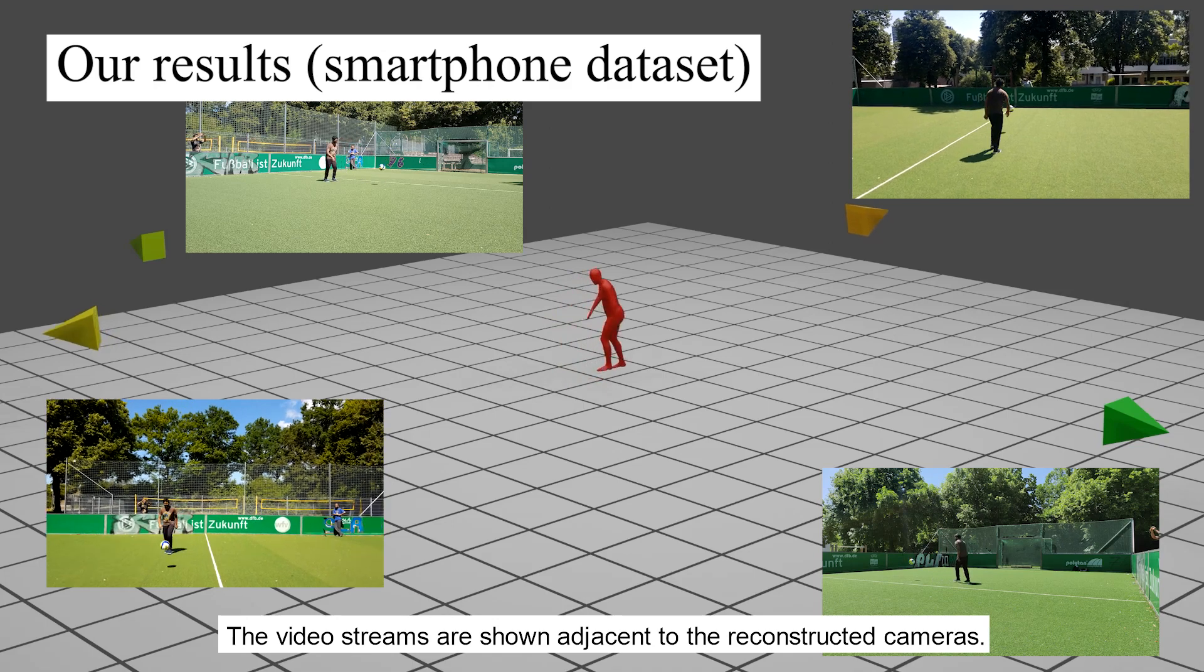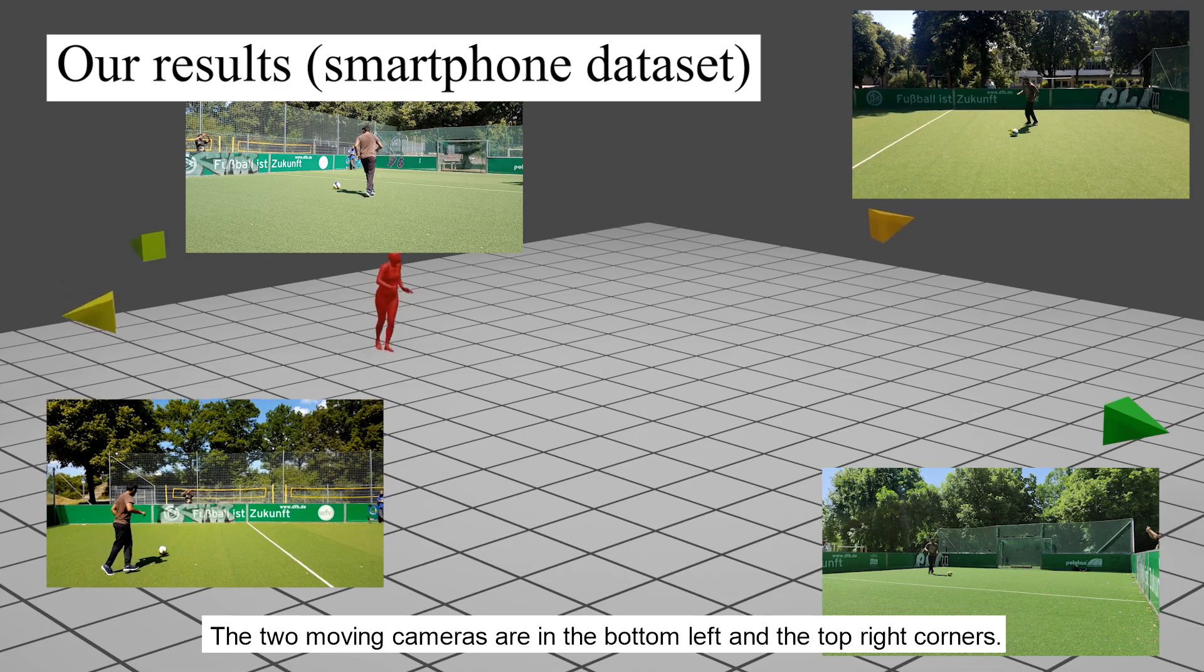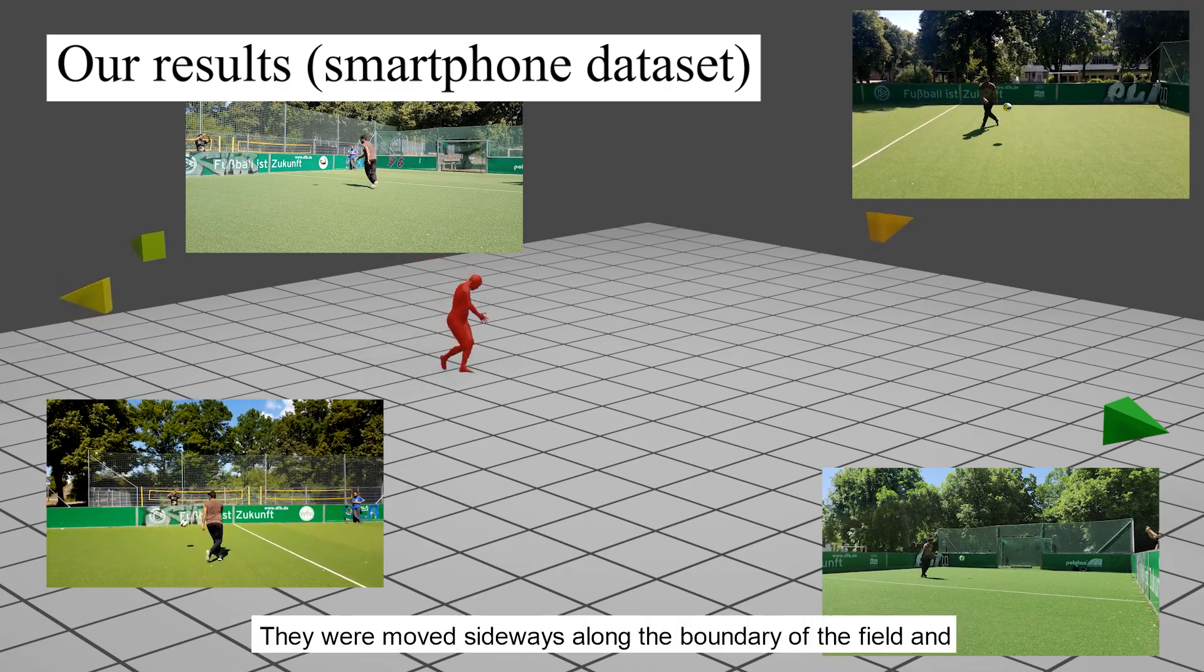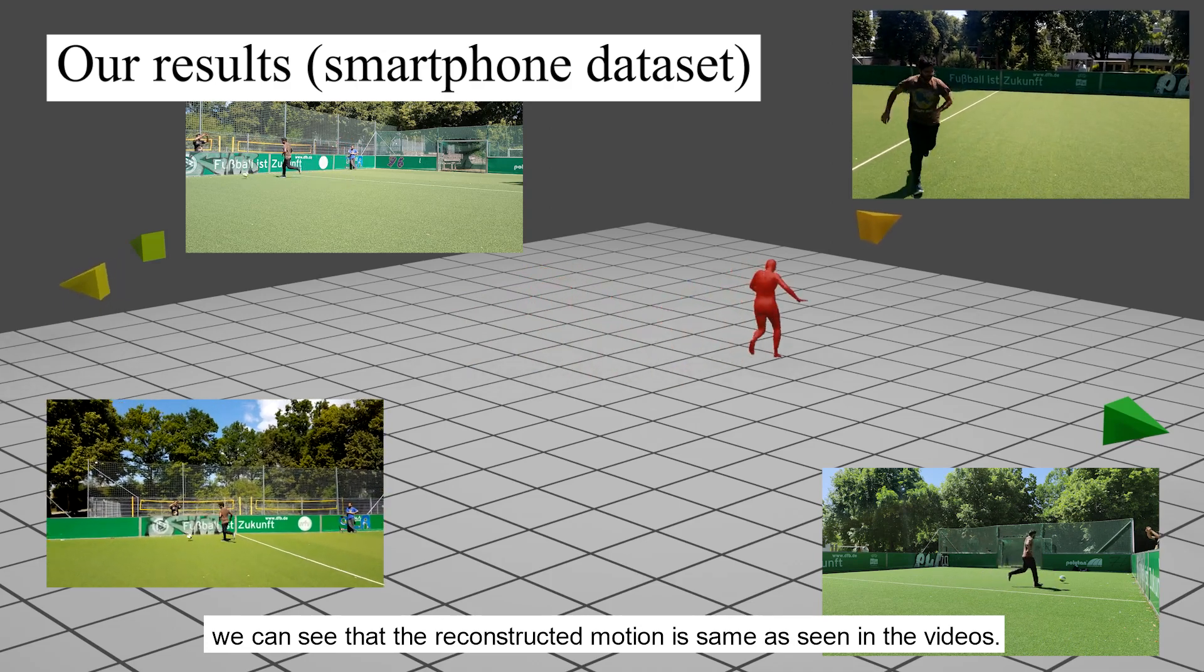The video streams are shown adjacent to the reconstructed cameras. The two moving cameras are in the bottom left and the top right corners. They were moved sideways along the boundary of the field, and we can see that the reconstructed motion is same as seen in the videos.